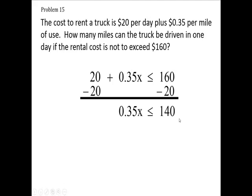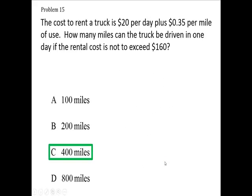Now we're going to divide both sides of the equation by $0.35. Take your left side divided by 0.35 and your right side divided by 0.35. You're going to come up with X is less than or equal to, and when you divide these, you're going to come up with 400 miles. So 400 is the number of miles.